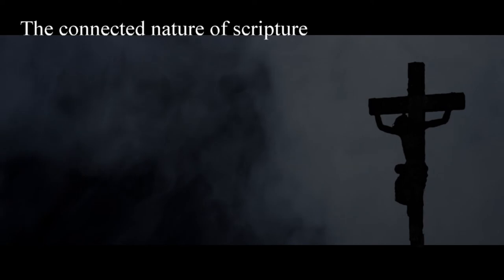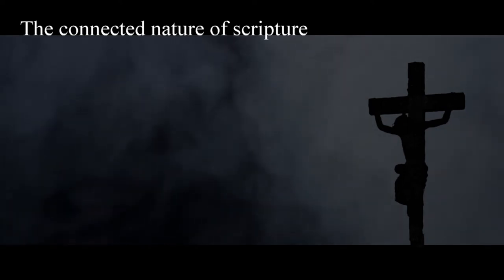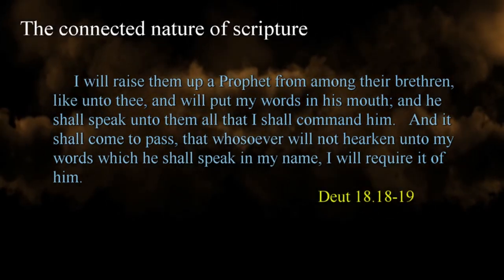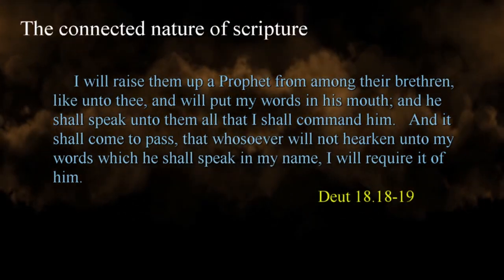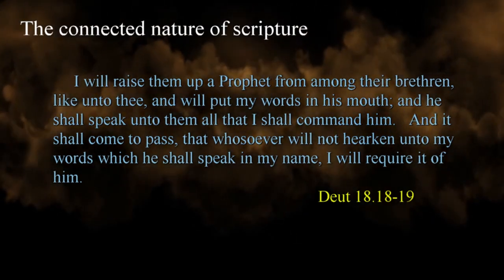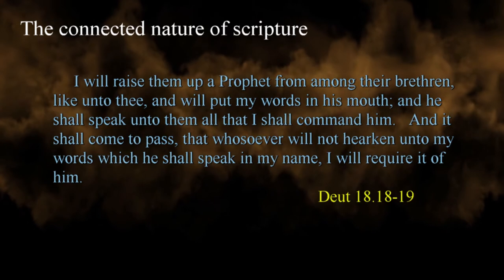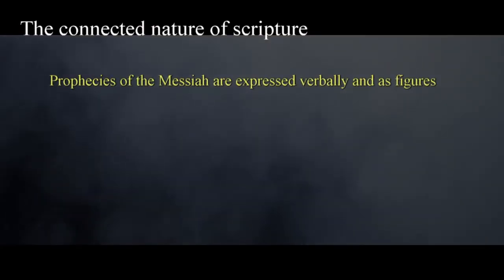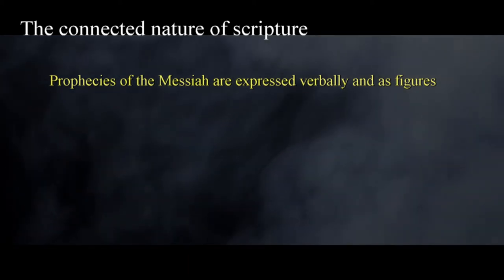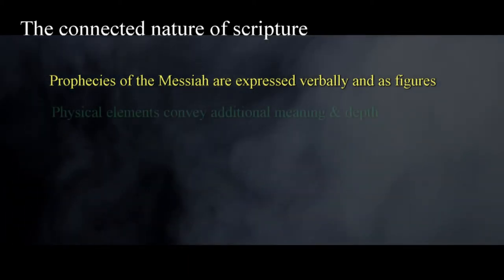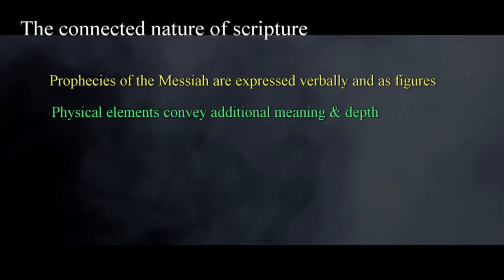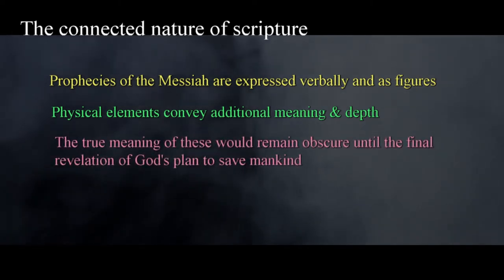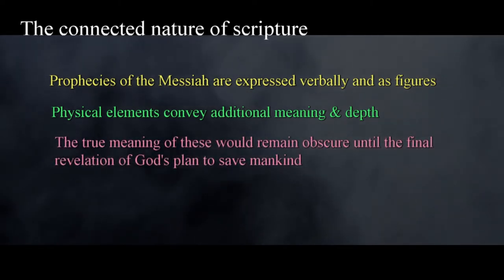From the early chapters of Exodus to the day of Pentecost, the law of Moses and its embedded symbolism are foundational elements that point directly to Christ. We are familiar with Moses' prophecy of a prophet like him that God would raise up and the implication of new commands or a law that would be given. But when we examine the nature of the law and its various practices, we may overlook symbols hidden in plain sight. Prophecies of the Messiah are expressed verbally and as figures within the text, but there are physical elements that convey additional meaning and depth. The worship of the Hebrews revolved around these elements whose true meaning would remain obscured until the final revelation of God's plan to save mankind.